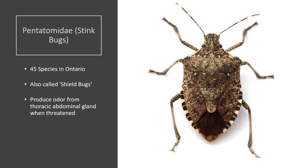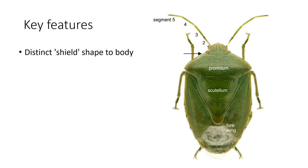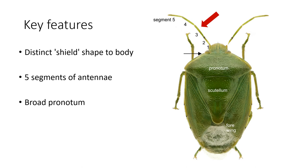Pentatomidae — stink bugs. There are 45 species in Ontario. They are also called shield bugs and produce an odor from their thoracic abdominal gland when threatened. This picture shows a brown marmorated stink bug, which is a notorious pest. Key features: they have a distinct shield shape to their body, five segments of antennae, and a broad pronotum.